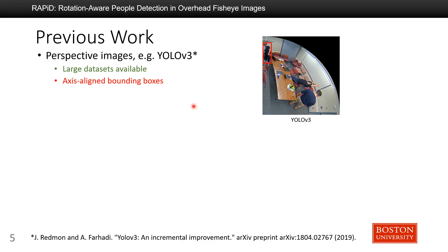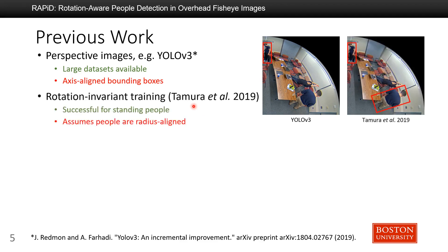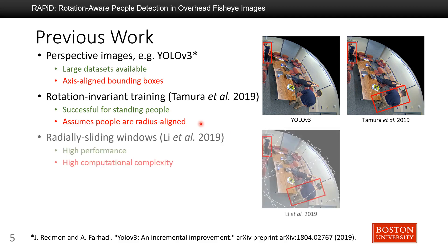To address this issue, several algorithms have been designed for fisheye images. For example, Tamira et al. used rotation-invariant training to produce radius-aligned bounding boxes, which is successful for standing people. However, they have a strong assumption that people are always radius-aligned, which is not true. Alternatively, Li et al. extracts sliding windows from fisheye images and applies YOLO v3 to each window, achieving good performance at the cost of very high computational complexity.